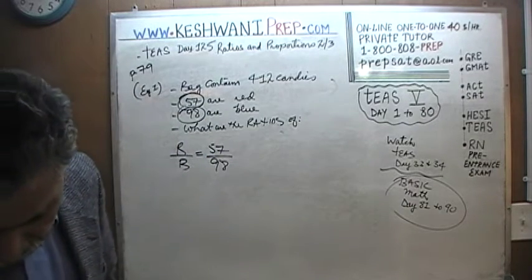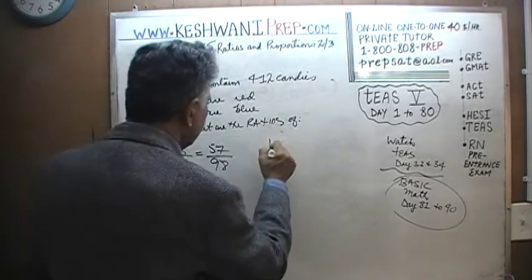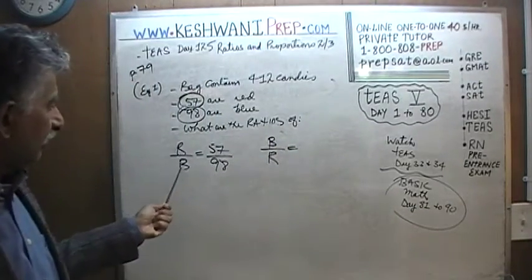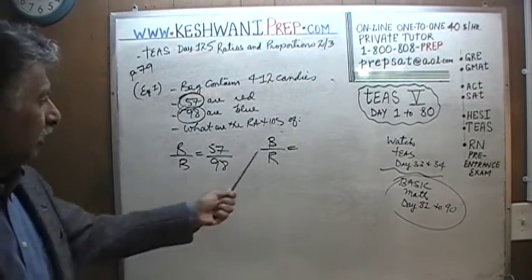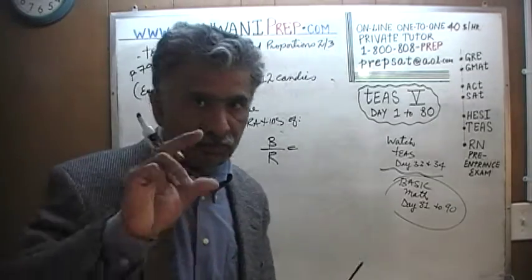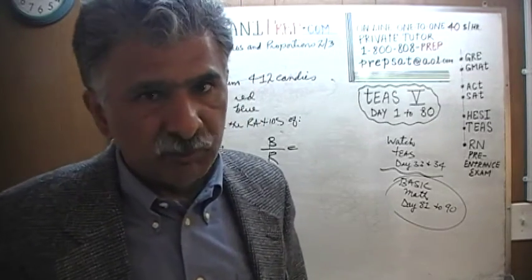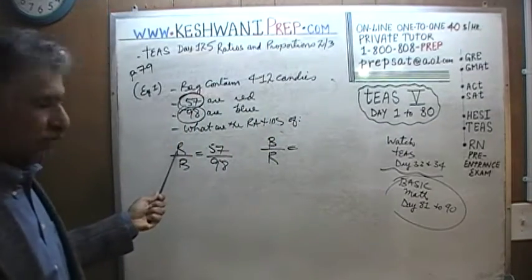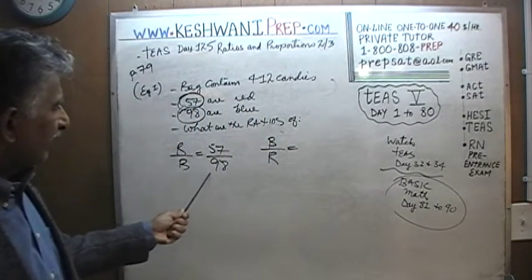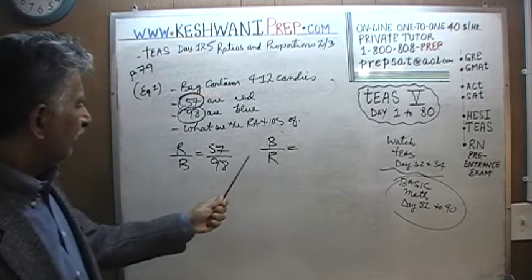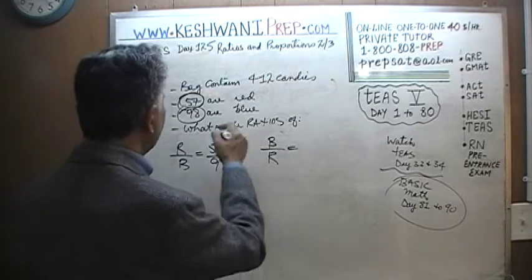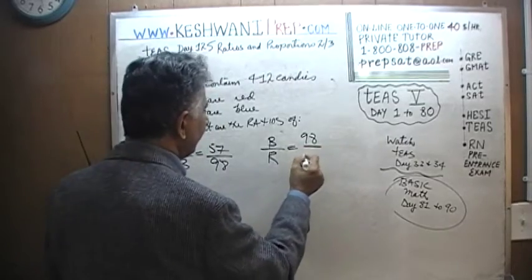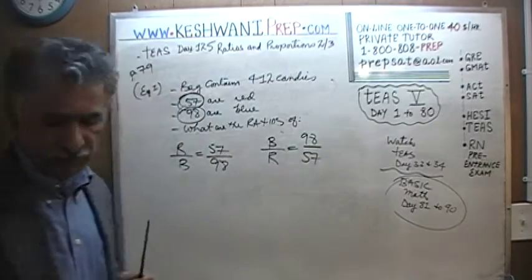The next ratio they are looking for is blue to red. That's very straightforward. Once you know the ratio of red to blue, blue to red is just going to be the reciprocal — the inverse. Reciprocal means inverse; you just flip it. So the ratio of blue to red is 98 to 57.